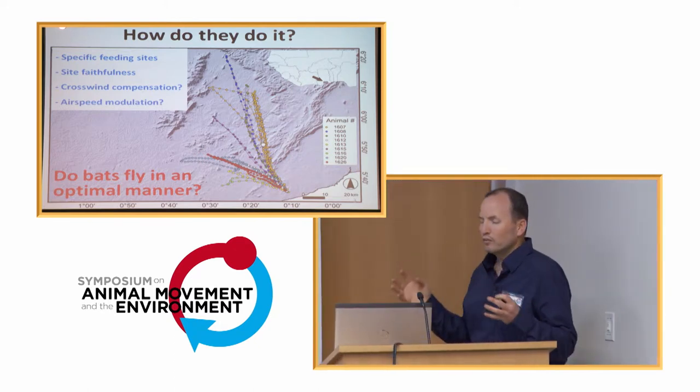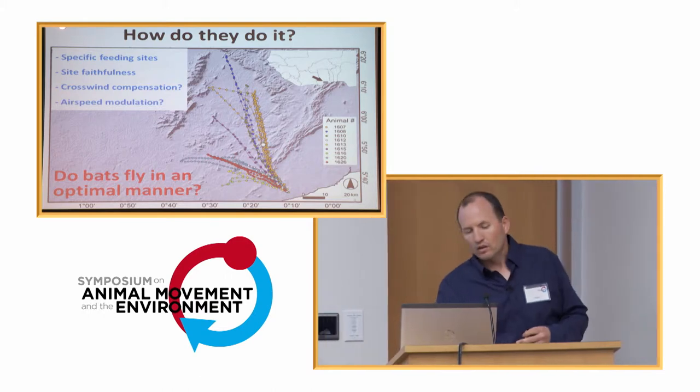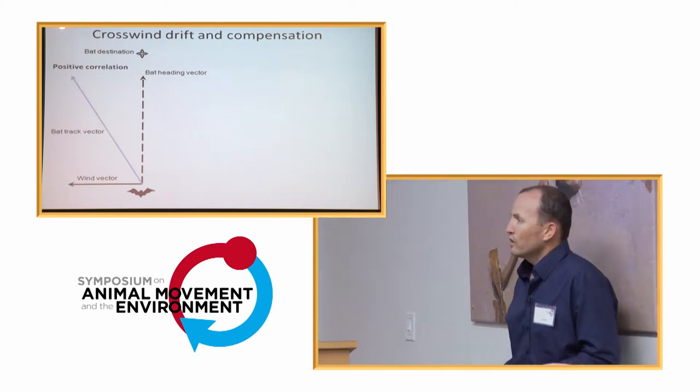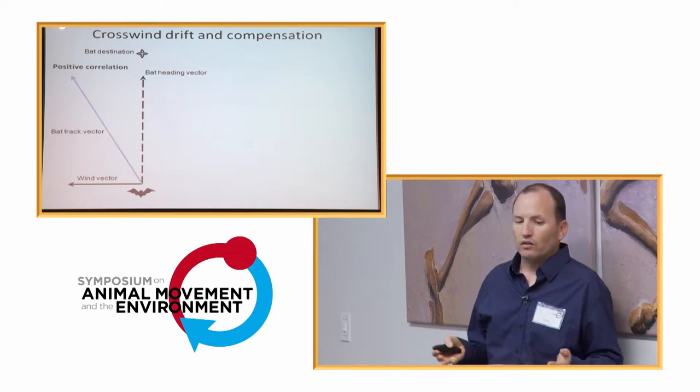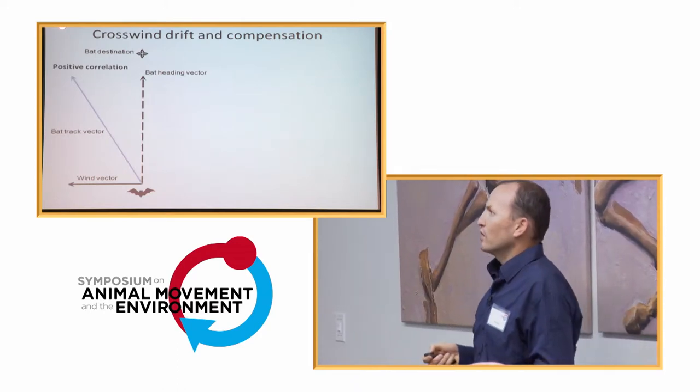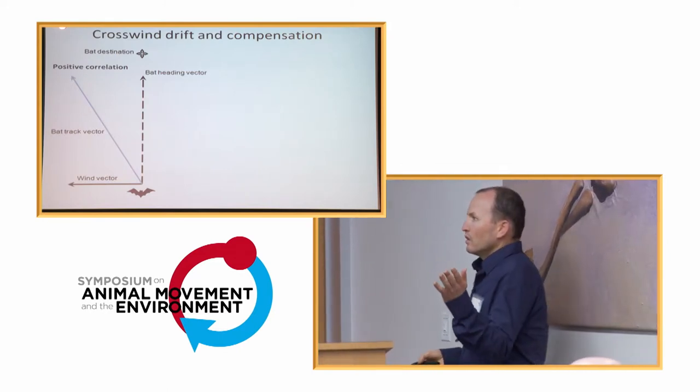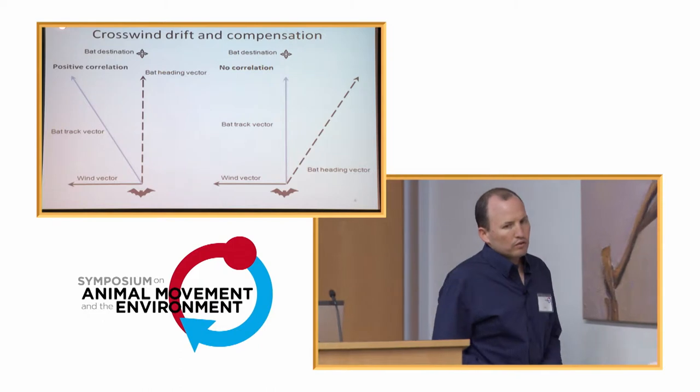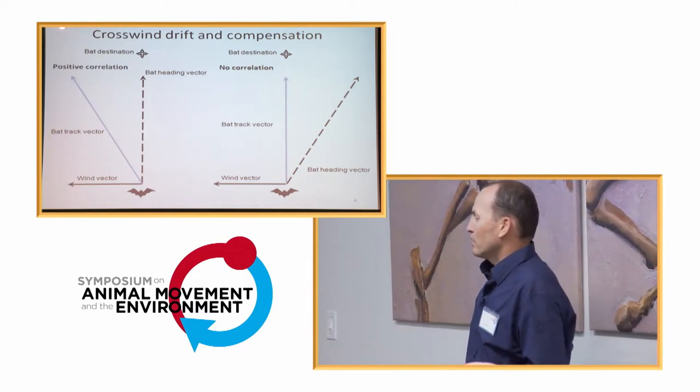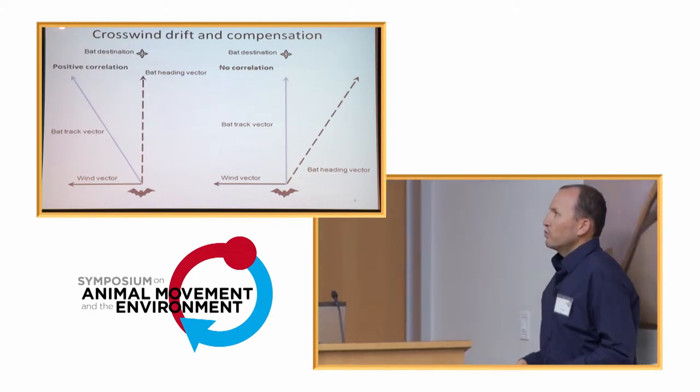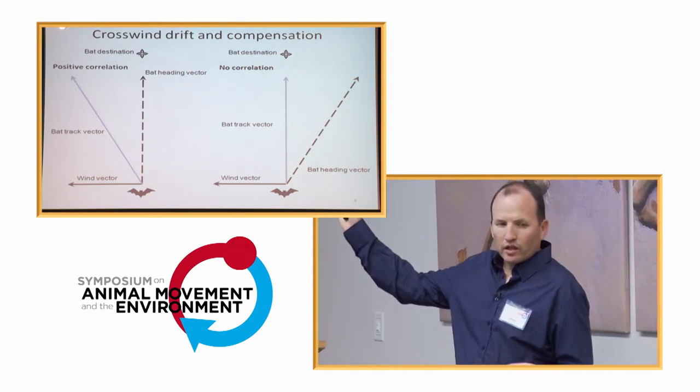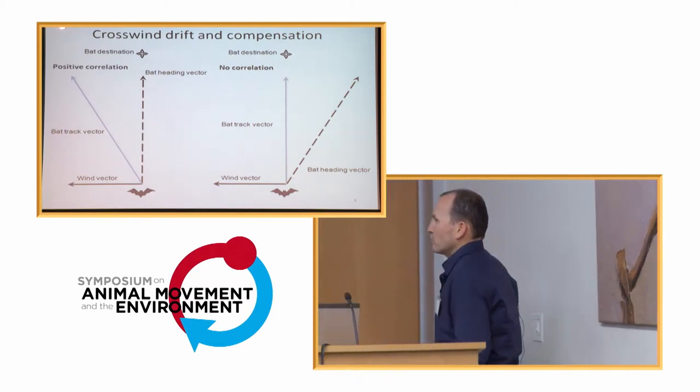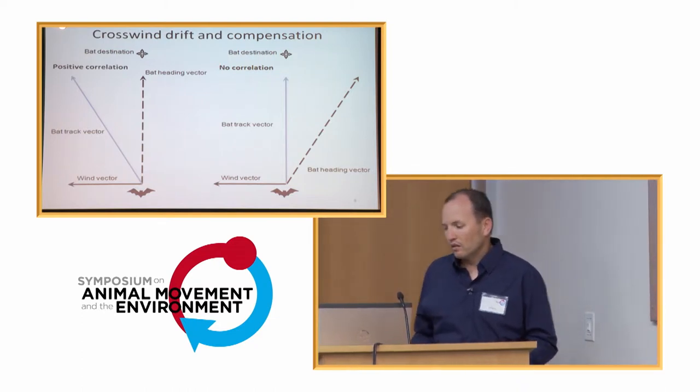So, in terms of the theoretical background, we know that when bats encounter sidewind, they may be drifted sideways, and in which case they will have positive correlation between their track and the wind vector. A different solution, which might be more optimal, would be to compensate, which means that when the bat have a wind coming through, it will change its heading and go towards the incoming wind so that its overall track will be towards its destination. And in this case, we expect no correlation between the wind vector and the bat track vector.